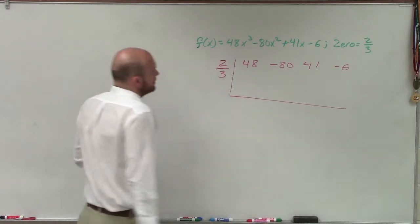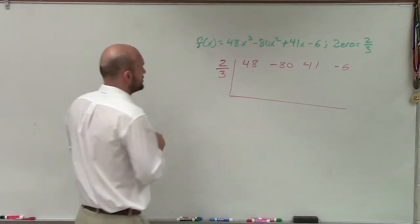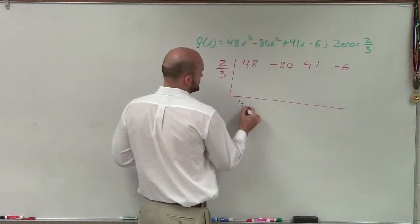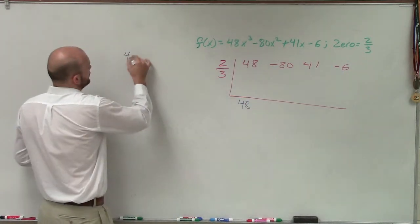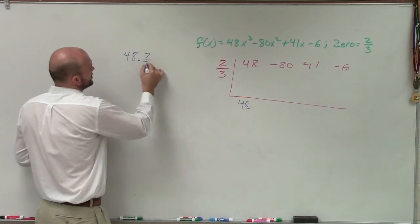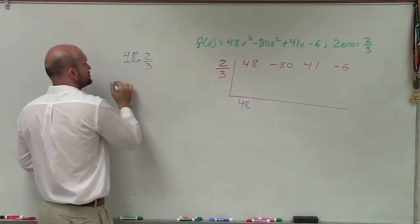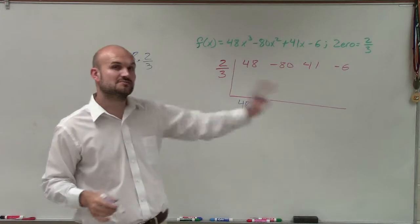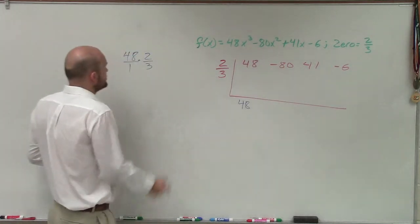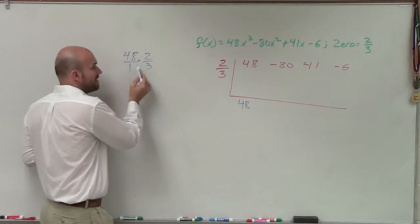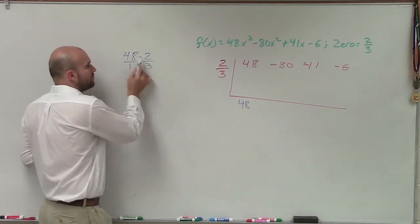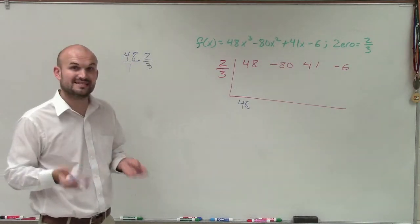All right. So to do this, remember synthetic division, we always bring down our first term. Now I know probably some students are going to have questions on how you multiply 48 times two-thirds. Well, there's a couple different ways you can do this. You can convert your 48 over to a fraction and then just multiply across. Another way you can do this is just take 48, divide 3 into it, and then multiply that by 2.